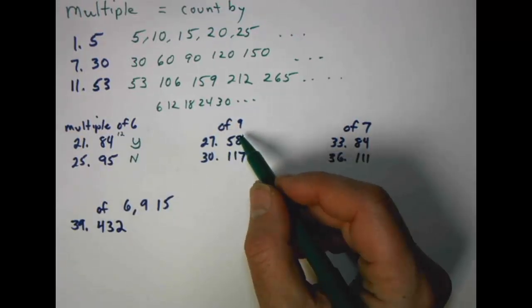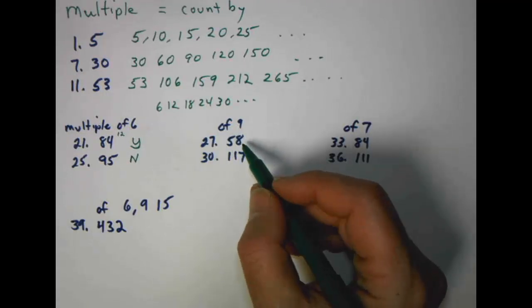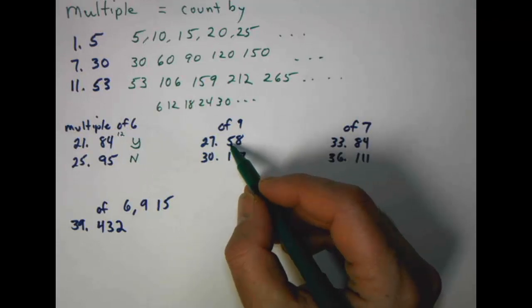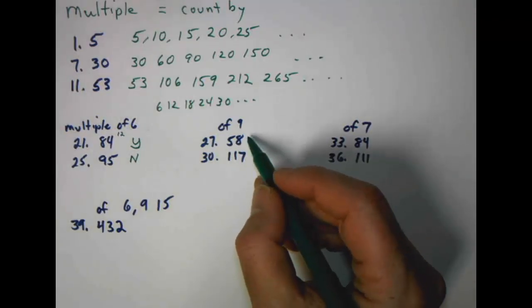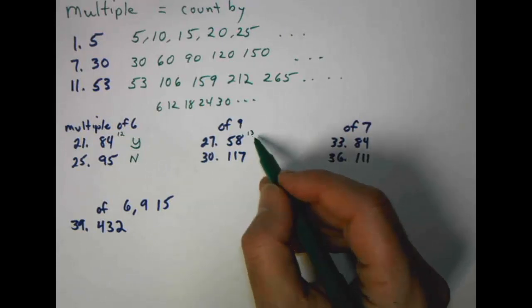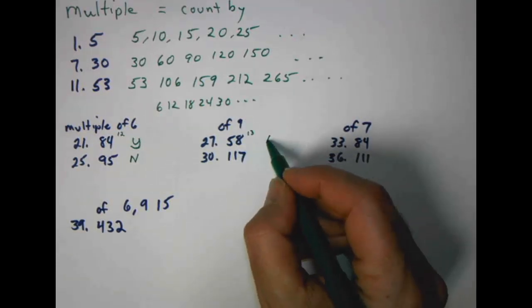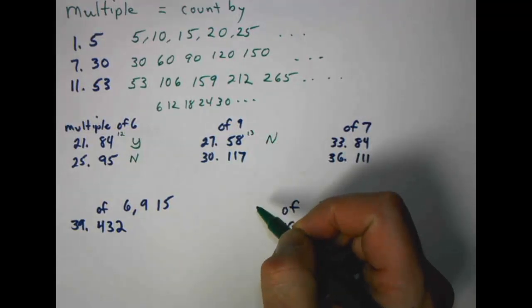And then they're going to ask you if these are multiples of nine. So we've got to go back to our rules. Sum of the digits divisible by nine. We told you to put those in your notes, so you had them. Five and eight is thirteen. Nine doesn't go into thirteen. Therefore, nine does not go into fifty-eight.